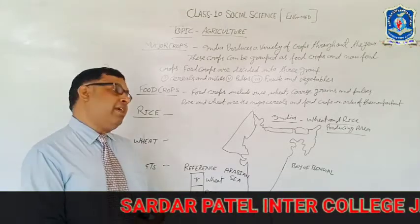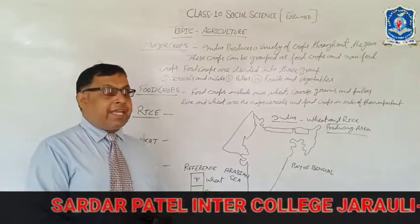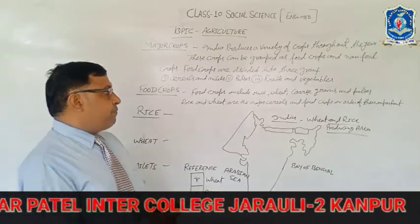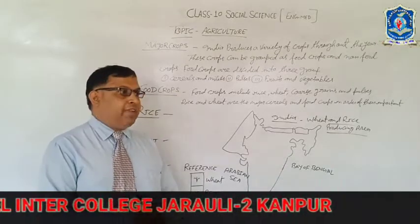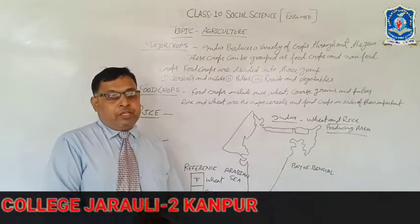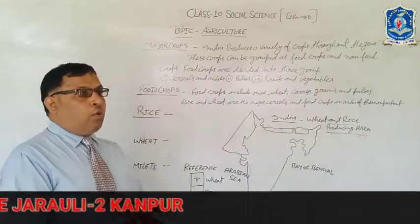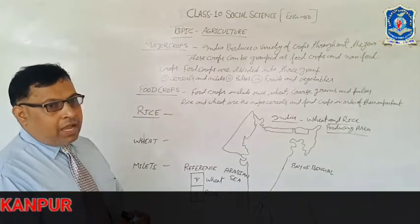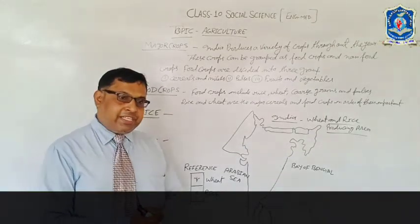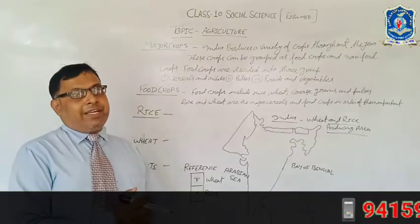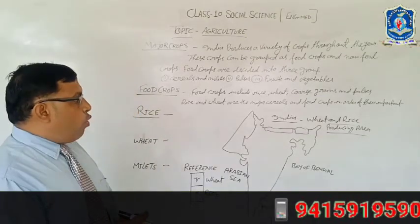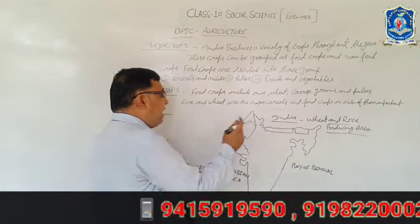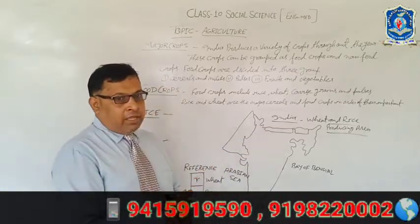Rice is also grown as an irrigated crop in Punjab and Haryana, as it requires large amounts of water. This makes rice the most important crop in India.